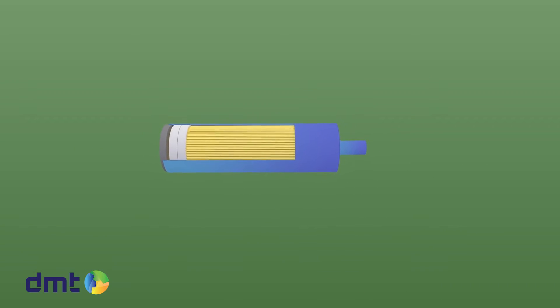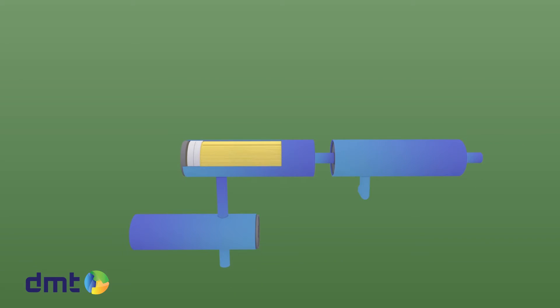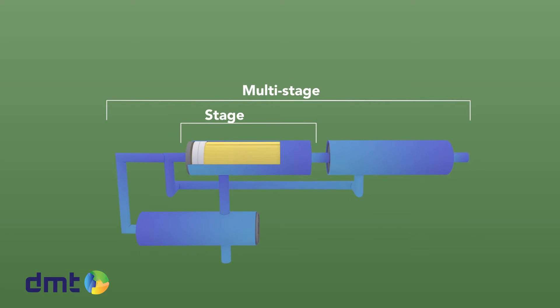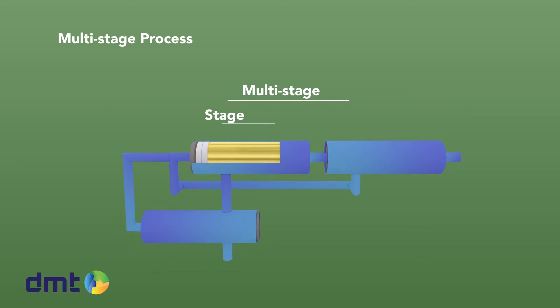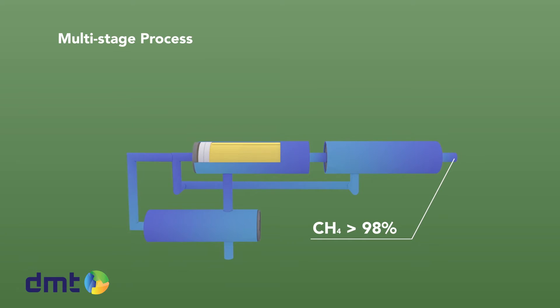To achieve a high purity of methane at the end of the process, a consecutive set of membranes are placed after the first. We call one set of membranes a stage. The multi-stage process can in this way achieve methane concentrations of up to 98%.